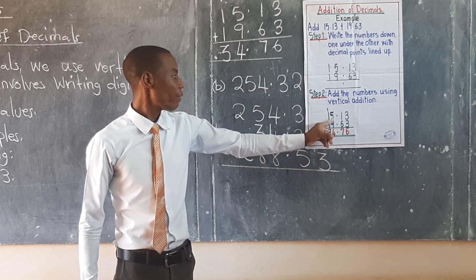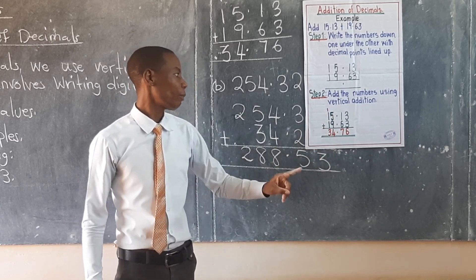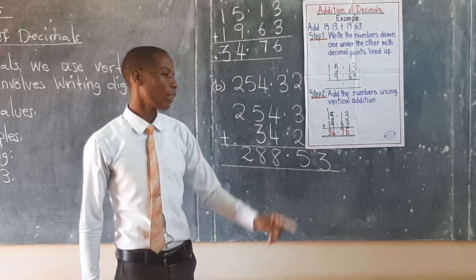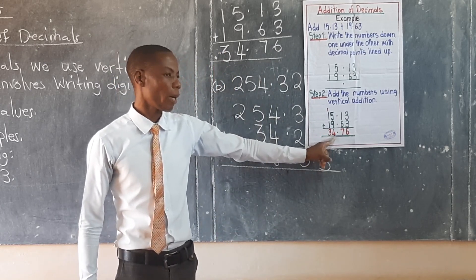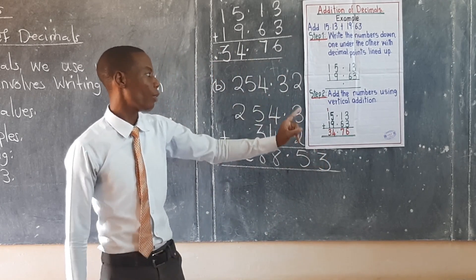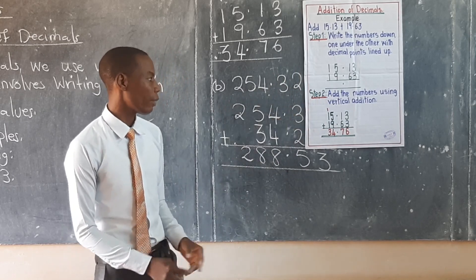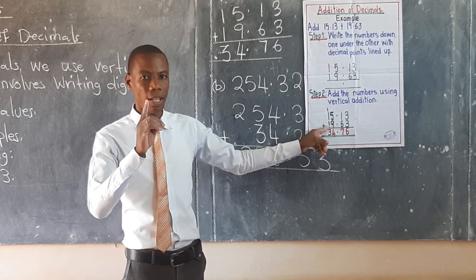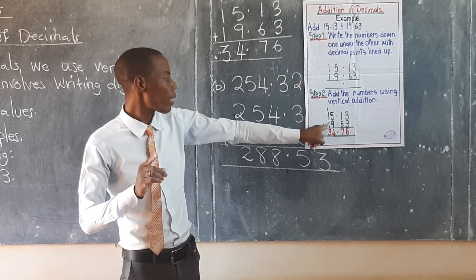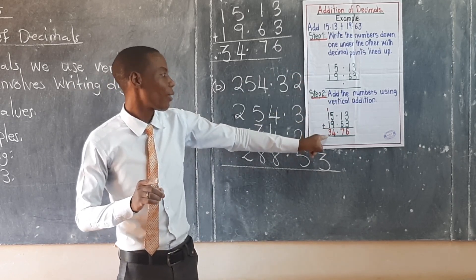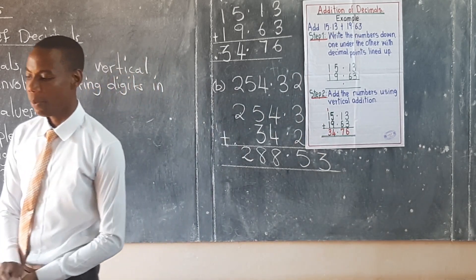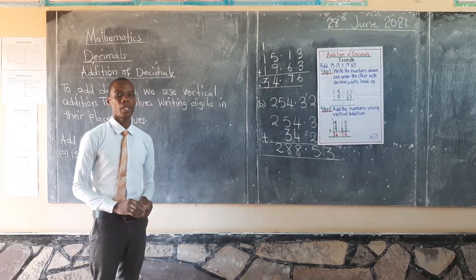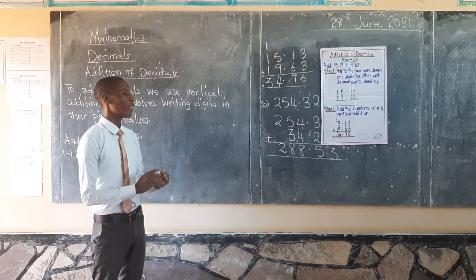Step two: add the numbers using vertical addition. You start adding from the far right — that is the golden rule. So we start with 3 plus 3, which gives 6. Then 1 plus 6 gives 7. The decimal points should be lined up. Then 5 plus 9 gives 14 — you write 4 and carry the 1 forward. Then 1 plus 1 gives 2, plus the carried 1 gives 3. That is the step we take — that is how we add decimal numbers.